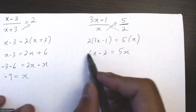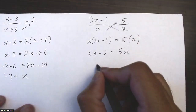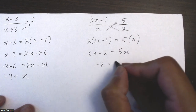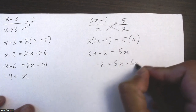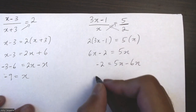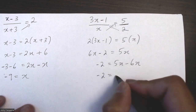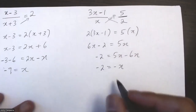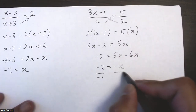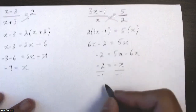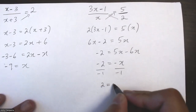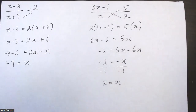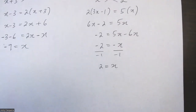I'll move the 6x so it's on the same side as the other x term, giving minus 6x. So negative 2 equals negative x. Dividing both sides by negative 1 gives positive 2 equals x. So x = 2 is my solution for the second one.